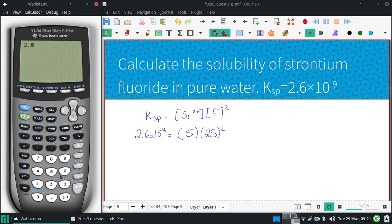So 2.6 times 10 to the negative ninth, divided by—I need to expand this all out. This becomes 4S squared times another S, which would be 4S cubed.